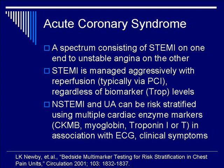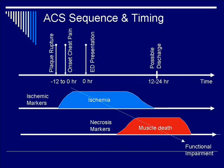ACS consists of a spectrum ranging from STEMI on one end to unstable angina on the other. STEMI is managed aggressively with perfusion, typically via PCI. NSTEMI and UA can be stratified with enzyme biomarkers.